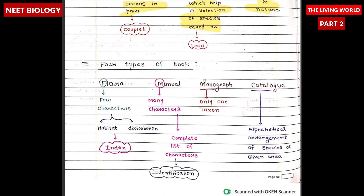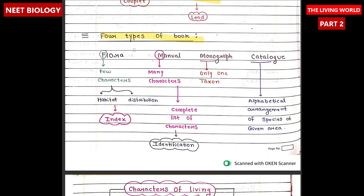Four types of books are used in taxonomy: Flora, Manual, Monograph, and Catalogue. Flora has few characters and divides into habitat, distribution, and has an index. Manual has many characters and provides a complete list of characters for identification. Monograph covers only one taxon, and Catalogue provides an alphabetical arrangement of species in a given area.